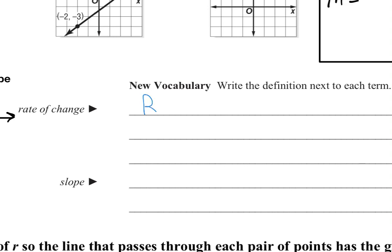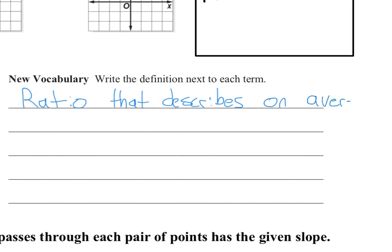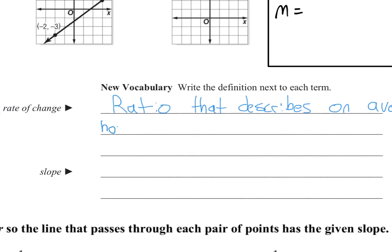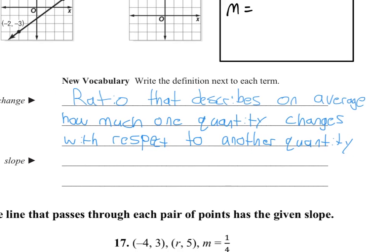So here's what rate of change is. It's a ratio. It's going to mean a fraction for us that describes, on average, how much one quantity, so one amount—quantity just means amount—changes with respect to another quantity.